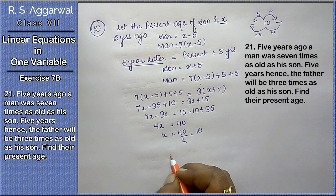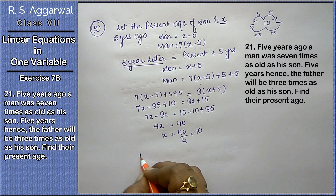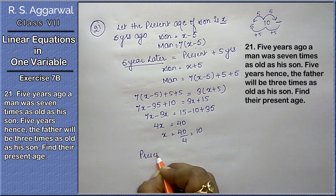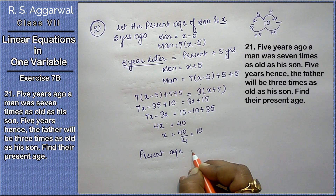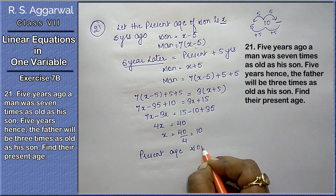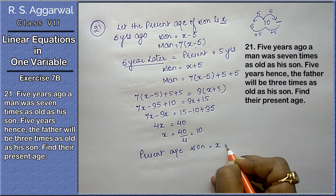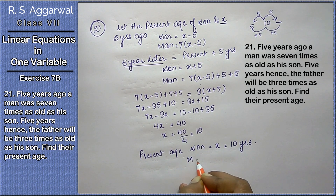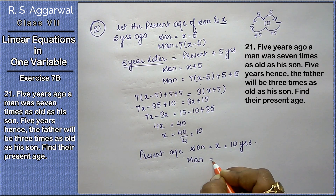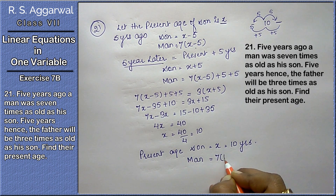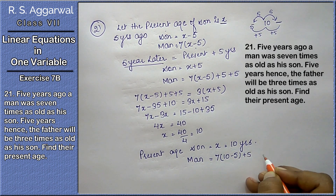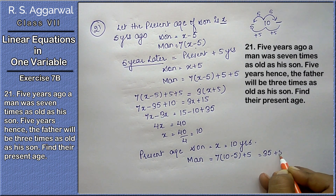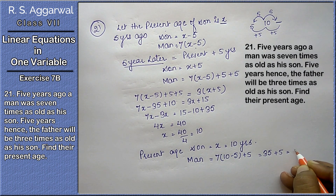x equals 40 upon 4, that is 10 years. We have to find the present age. The present age of the son is x, that is 10 years. And the man's present age is 7 times 5 plus 5, that means 35 plus 5, that means 40 years.